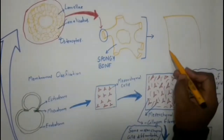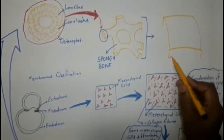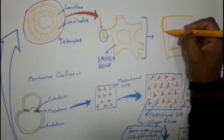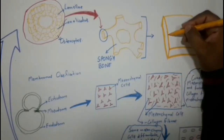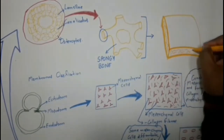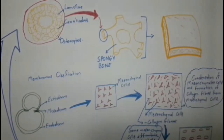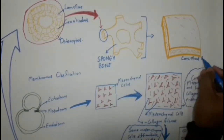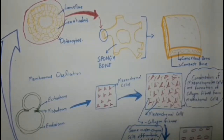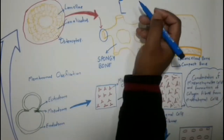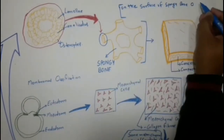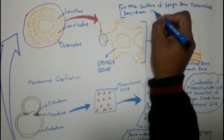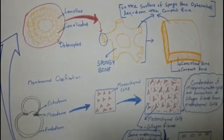Here we see a compact bone alongside a spongy bone. This is a section of the cranial vault, showing cancellous bone and compact bone. On the surface of the spongy bone, osteocytes lay down the compact bone.